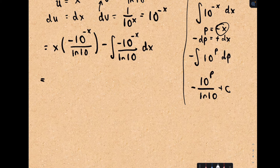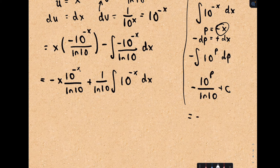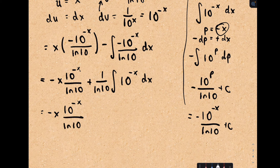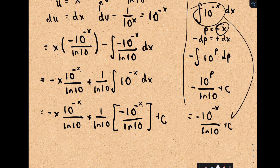Now we're in luck. This is negative x times 10 to the negative x over ln(10). Pulling out the negative, a negative and a negative is a positive. I can pull out 1 over ln(10) and I'm still integrating 10 to the negative x dx — but we just figured out what that integral is. So we get negative x times 10 to the negative x over ln(10), plus 1 over ln(10) times negative 10 to the negative x over ln(10), plus c. There's no more integral, and we've got our solution.